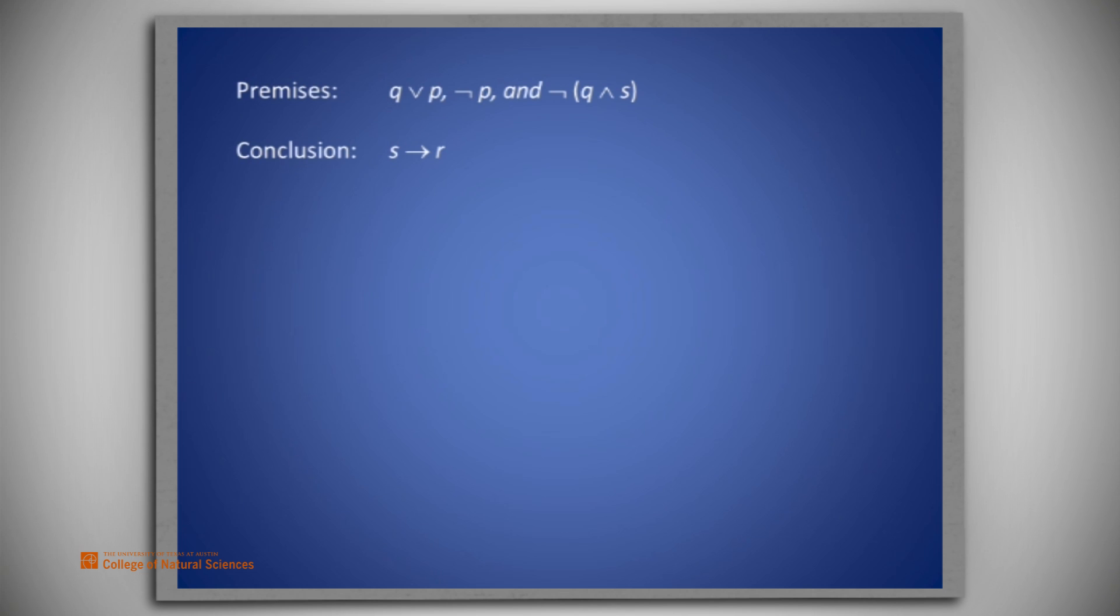This particular proof is going to employ the contradictory premises rule. However, as has been said, an alternative proof of the same theorem using addition is found in a separate video. This proof will also use conditionalization.